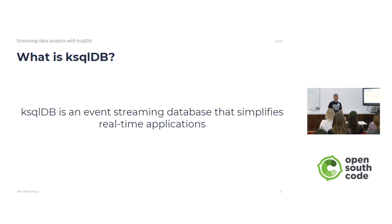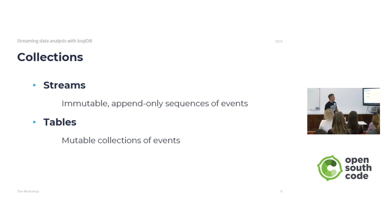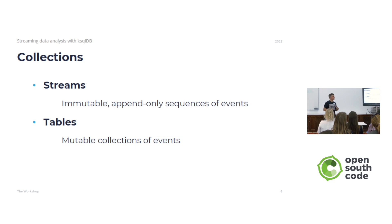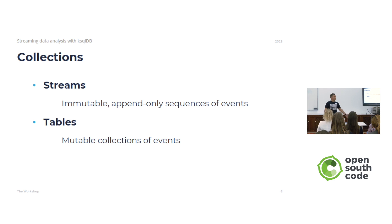Now we are going to see some key concepts about ksqlDB. One concept is about collections. We have two different types: one is streams, which are immutable — we are always appending data to that log. If you think about this in a database, it's like a table without a primary key where you can only append data. We also have tables, which are mutable. Every time a new record arrives, it's an insert; an update will update the record; and a deletion will delete the record.